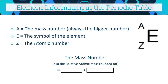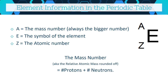If you have the mass number and the atomic number, you can work out the number of neutrons by subtracting one from the other. For example, if you have an atom of carbon with a mass number of 13, carbon's atomic number is 6 — so it has 6 protons. Doing 13 minus 6 gives you 7 neutrons for that particular carbon atom.